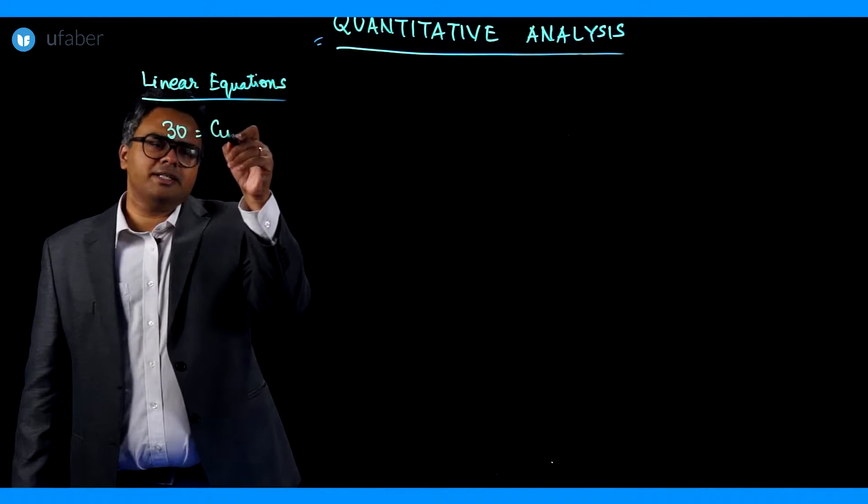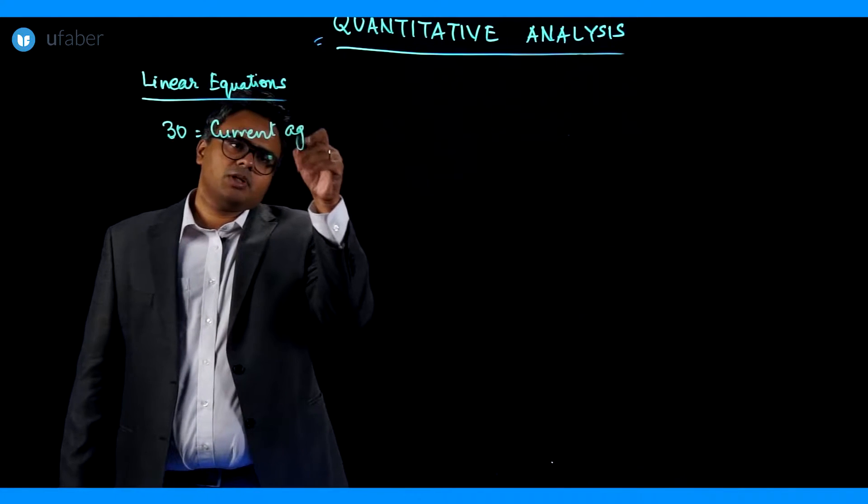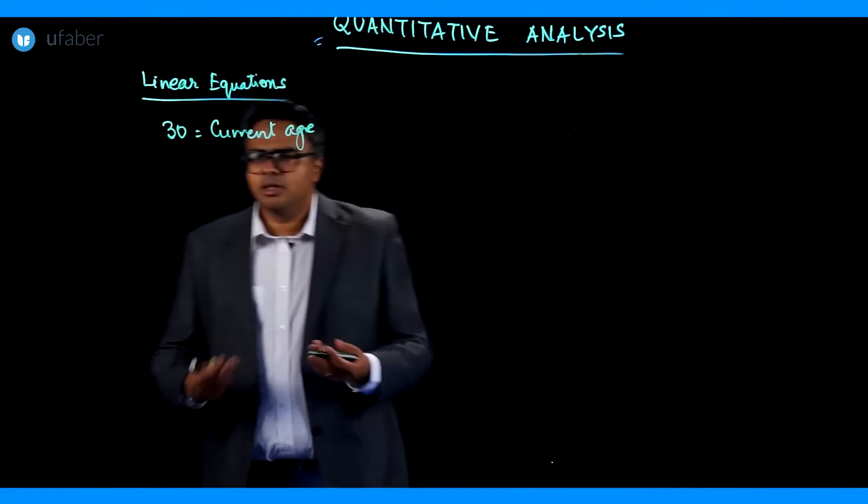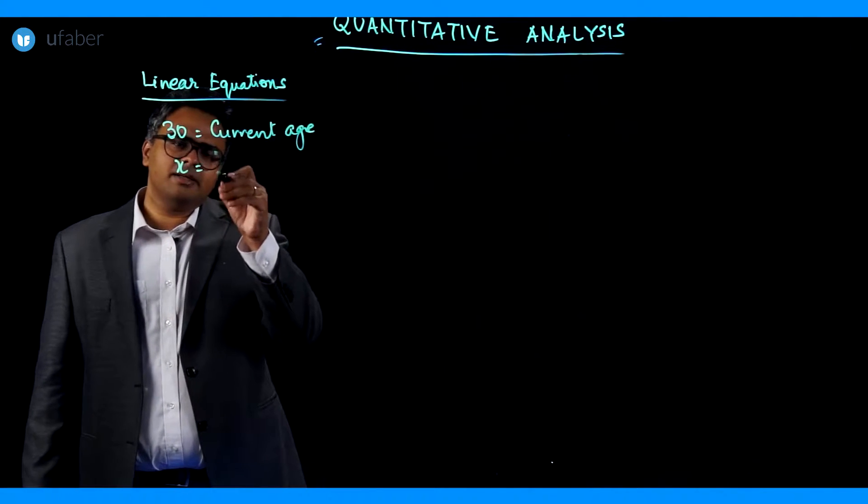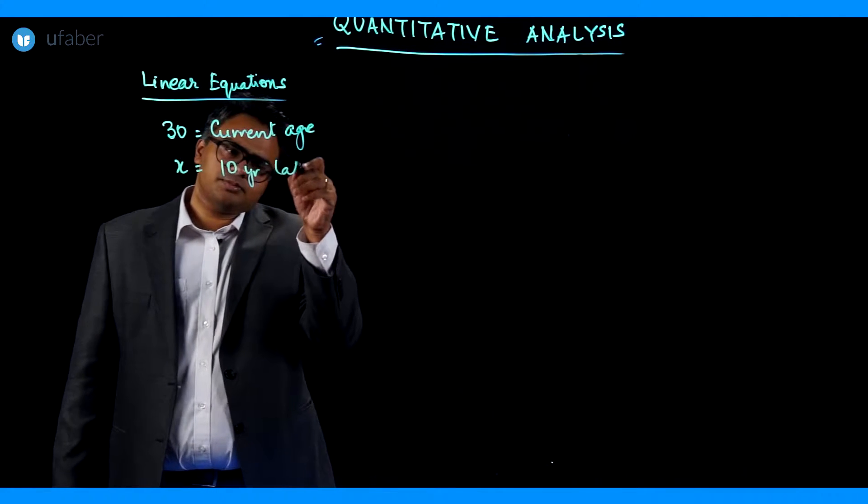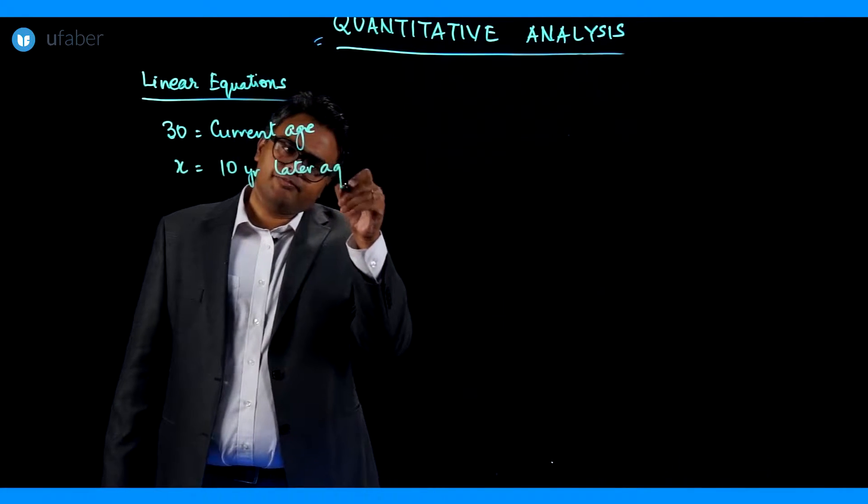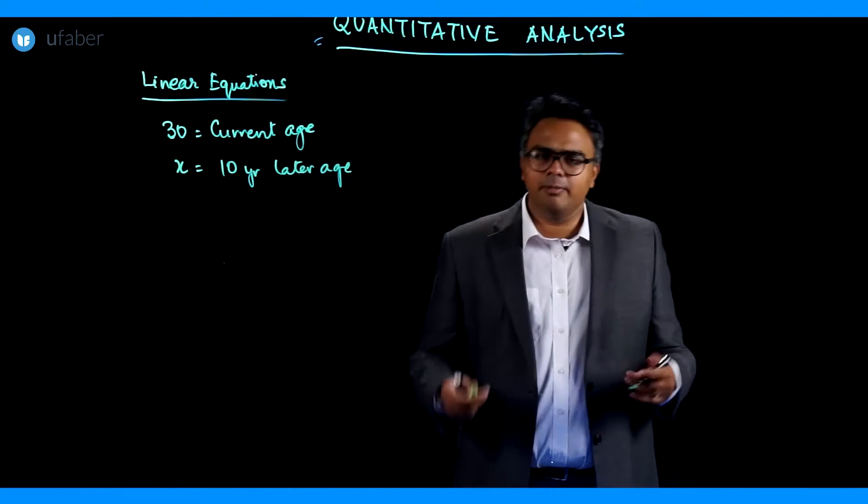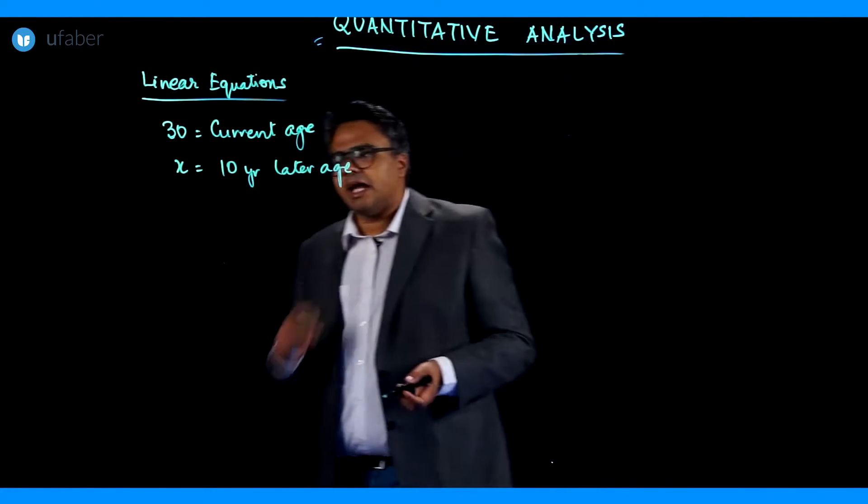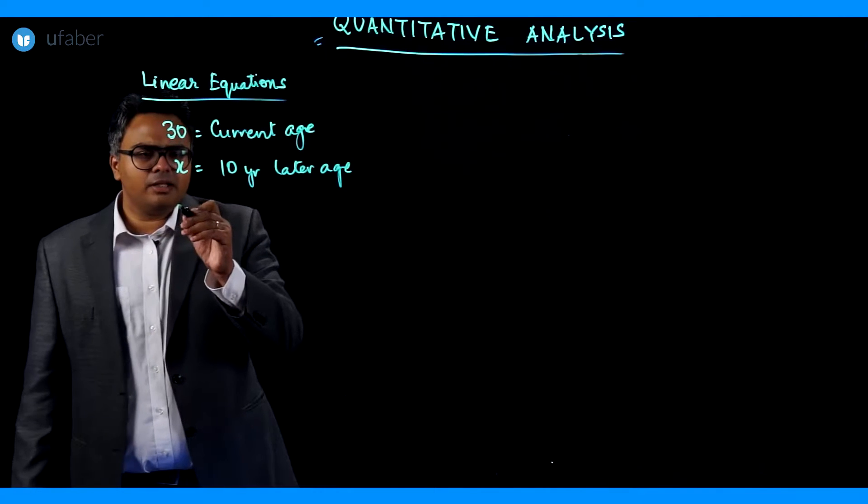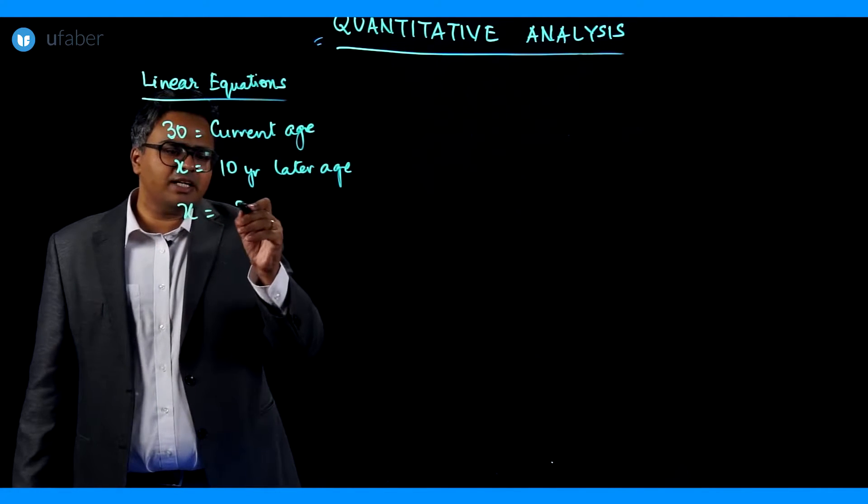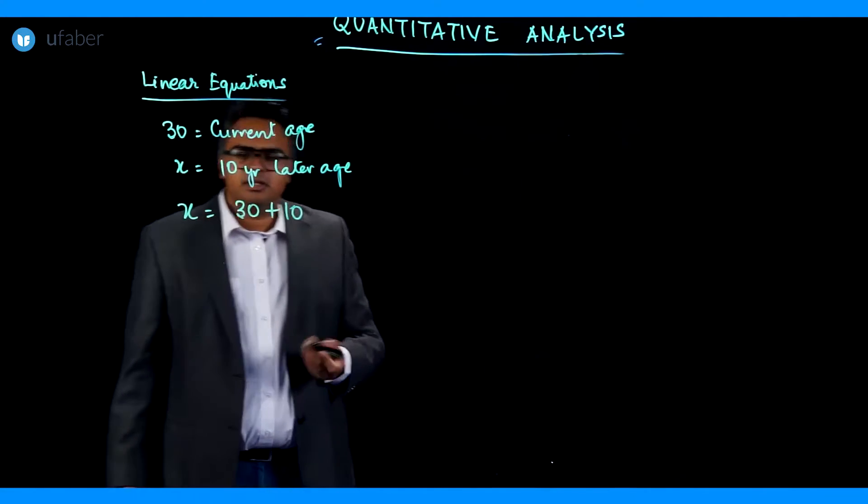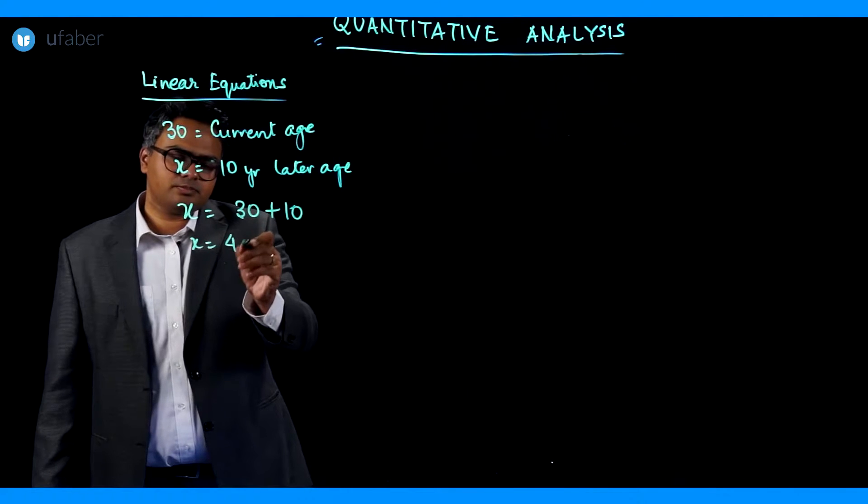I will write it as current age and I say what will be my age 10 years later? So let's assume that my age 10 years later is x. Now we all know that 10 years later my age will be my current age plus 10 years. So can we write it as x is equal to current age that is 30 plus 10. That means x is equal to 40.